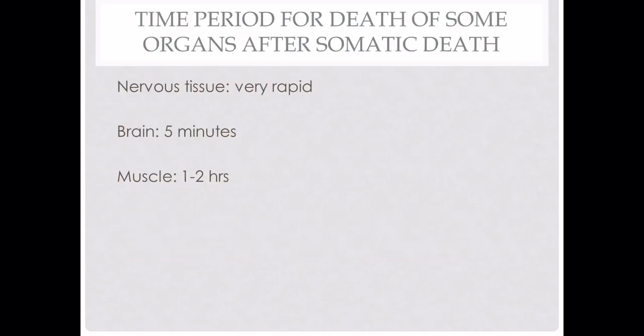Let's see the time period for death of some organs after somatic death. Nervous tissue has a very rapid rate of dying. For the brain, it takes five minutes after somatic death. For muscle, it takes one to two hours after somatic death. This one to two hour period is due to the large quantity of ATPs present in the muscle for muscle contraction — it takes one to two hours for those ATPs to get depleted.